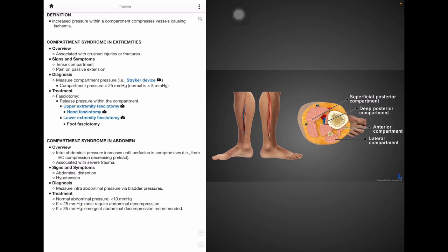Our last compartment syndrome is in the abdomen and this is associated with severe trauma. Here the abdominal pressure will increase until perfusion is compromised. For instance, from inferior vena cava compression decreasing the preload. Abdominal distension and hypotension can be noted in affected patients. To diagnose bladder pressure is used to measure the pressure inside the abdominal cavity. The normal limit for abdominal pressure is less than 10 millimeters of mercury. However, patients with abdominal pressure exceeding 25 millimeters of mercury most often require abdominal decompression. And those patients with a pressure greater than 35 millimeters of mercury are indicated for an emergent abdominal decompression.